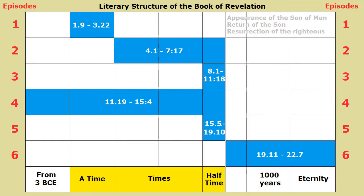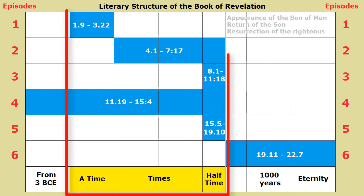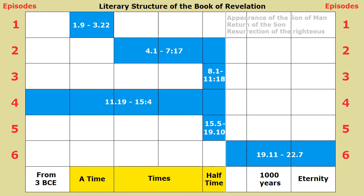The book of Revelation foresees several end-time events happening during a period of time, times, and a half-time — that is, three and a half years, 42 months, or 1,260 days. The several episodes overlap, and each episode occurs on all or part of this calendar.